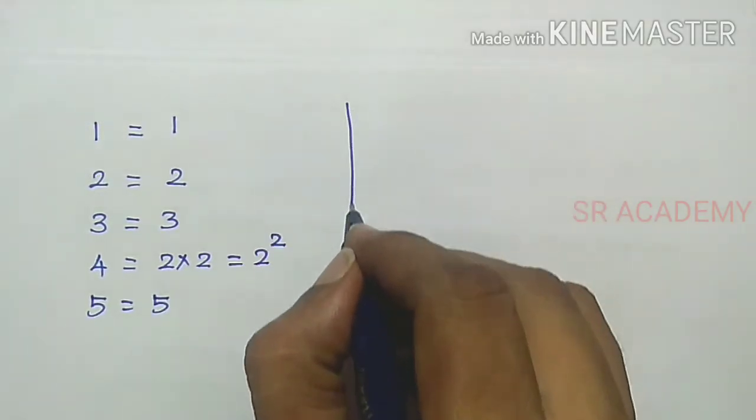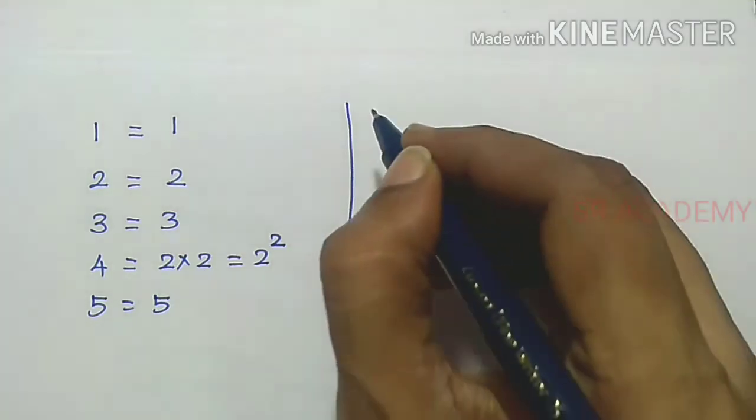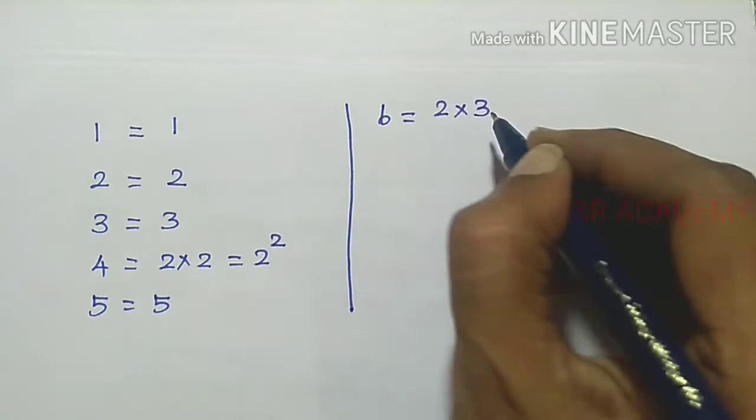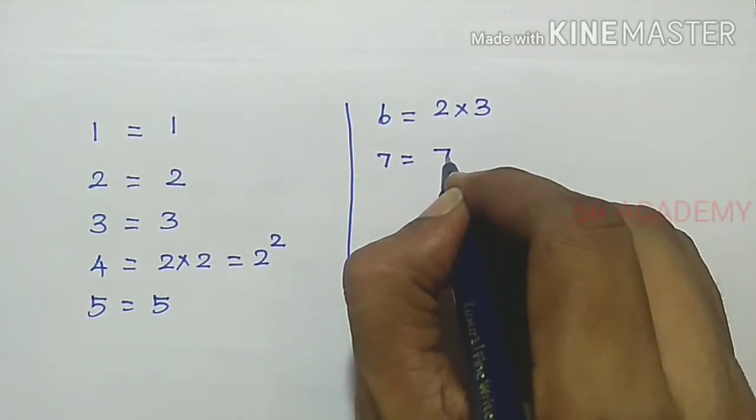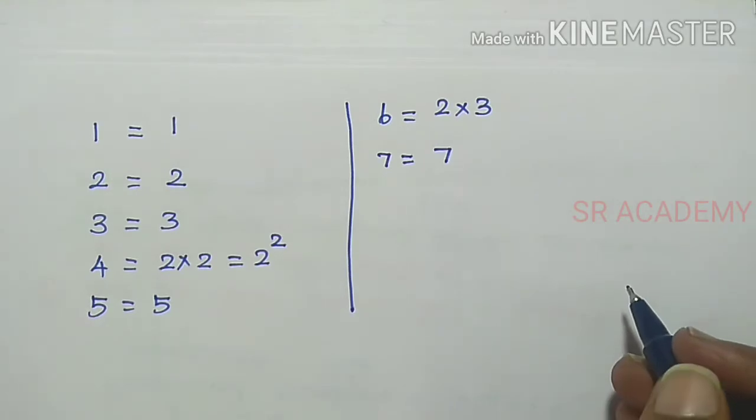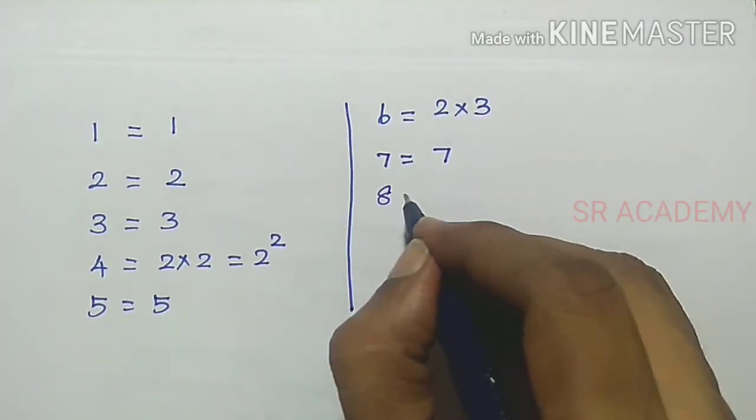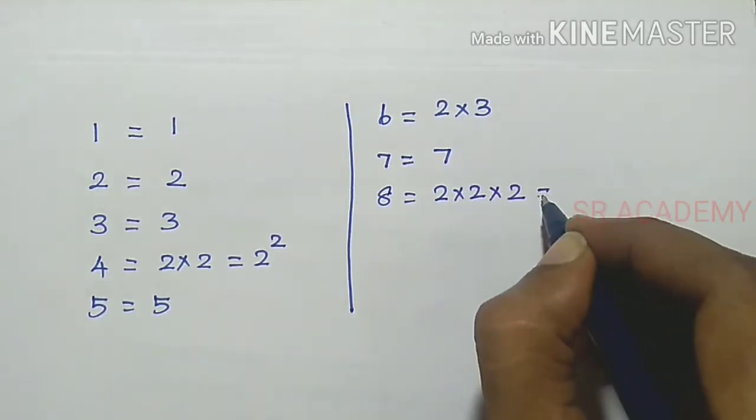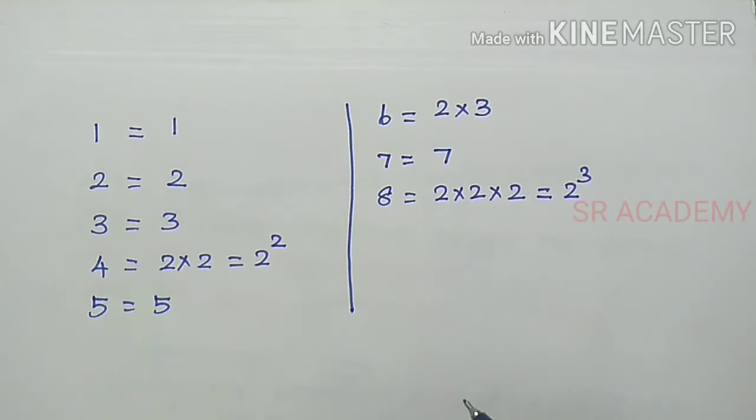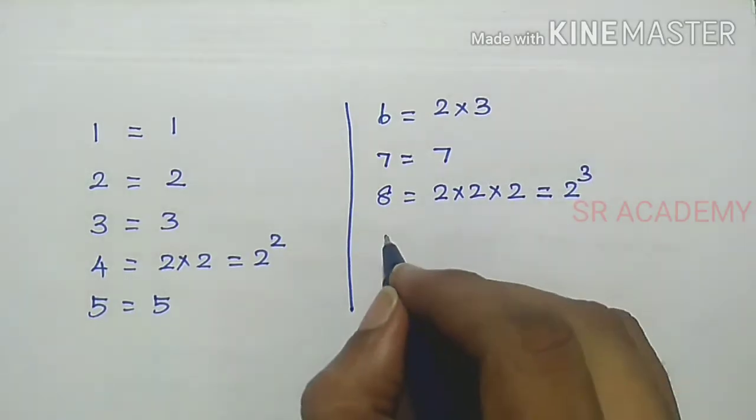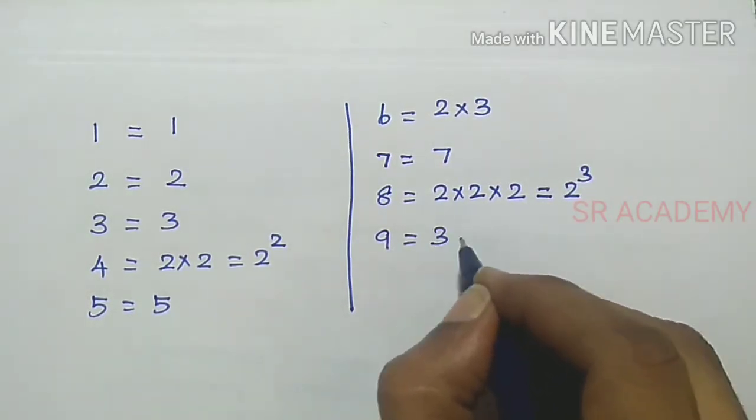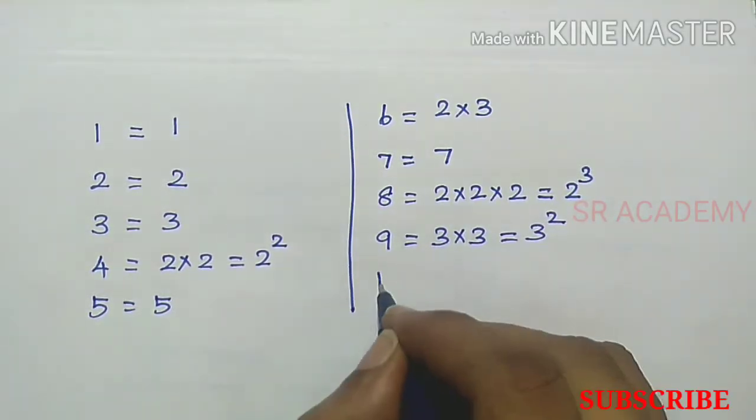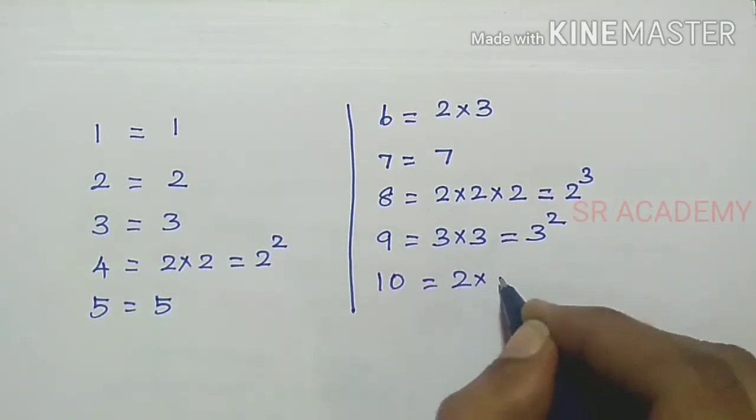6 equals 2 times 3. 7 is a prime number. 8 equals 2 times 2 times 2, that is equal to 2 cube. 9 equals 3 times 3, that is equal to 3 square. 10 equals 2 times 5.